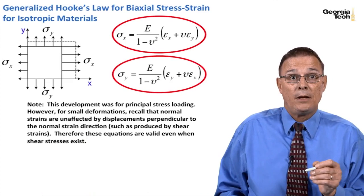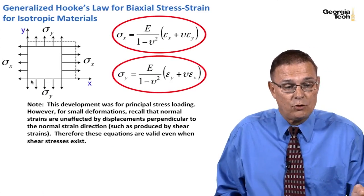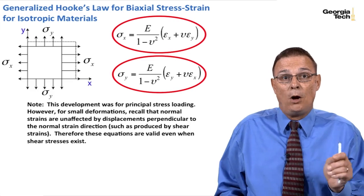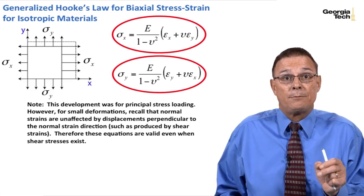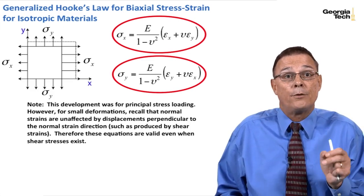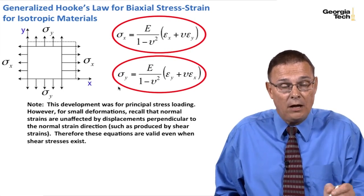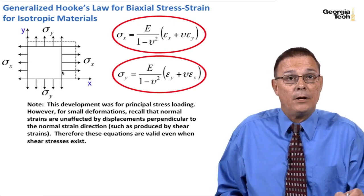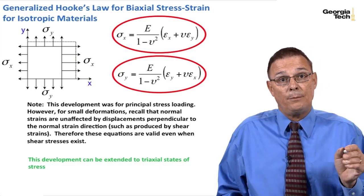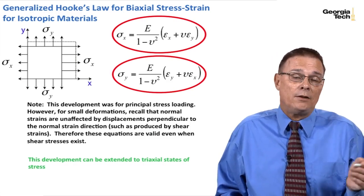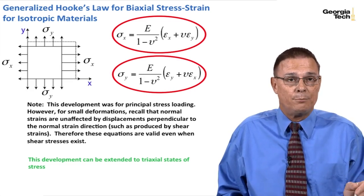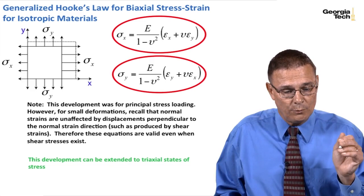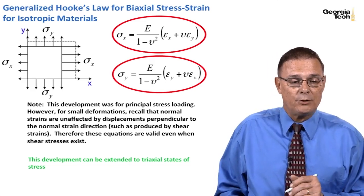This development was done for principal stress loading with only normal stresses in the x and y directions. However, for small deformations, normal strains are unaffected by displacements perpendicular to them, such as those produced by shear strains. Therefore, these equations are equally valid even when shear stresses exist on the stress block. You can extend this approach for triaxial states of stress — consult your mechanics and materials references — but in this course we limit ourselves to biaxial stress-strain relationships for isotropic materials. This is generalized Hooke's Law.